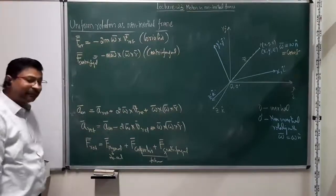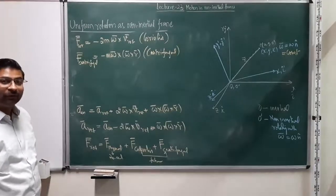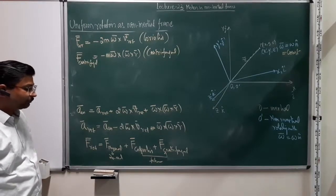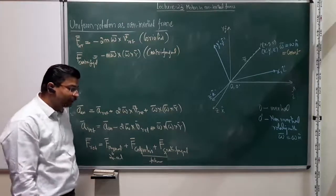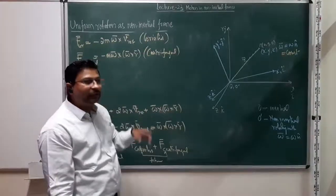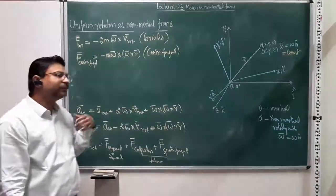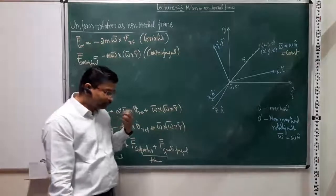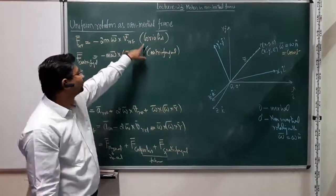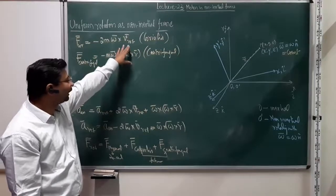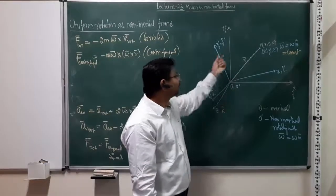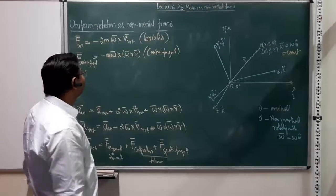If you look at these two expressions, these are the same expressions we derived in case of plane polar coordinates when we discussed vector notations. At that time, when we wrote down the acceleration in plane polar coordinates, we found a couple of terms in the r̂ direction and a couple of terms in the θ̂ direction. I mentioned then that one is the real acceleration and there are additional terms called Coriolis and centrifugal. So this is the origin of those terms — there we did it in terms of coordinate transformation, and here that same transformation is arising because of the rotation of the coordinate frame.